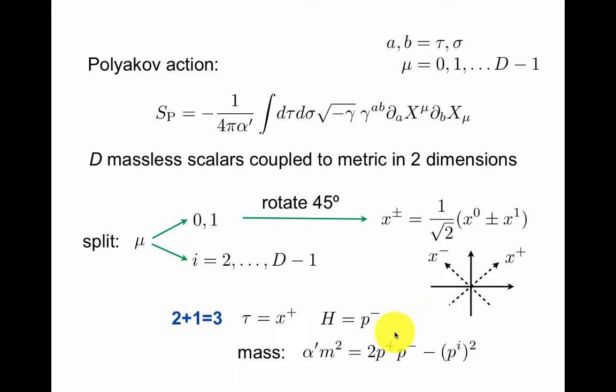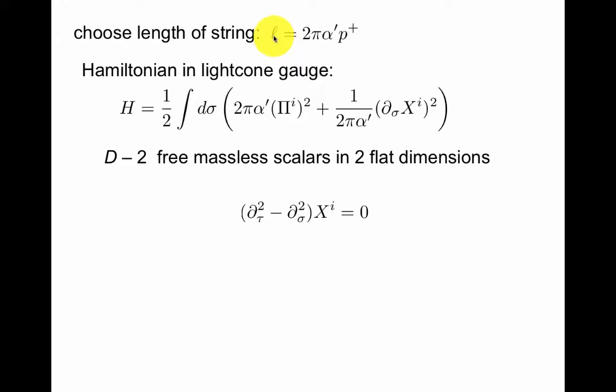Just to have something to keep in mind, we know that in the superstring d will be 10. So this will be two directions and this will be eight directions. We'll have eight transverse directions labeled by an index i. Here is just a quick sketch, so I'm just going to set the length of the string to be some convenient value. And then the Hamiltonian in light cone gauge looks like this. So this is integrated over the length of an open string. So now in light cone gauge we see that we don't have d scalars anymore. We have only the transverse scalars. So in 10 dimensions this would be eight scalars x^i.